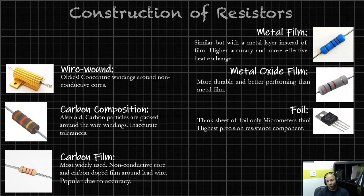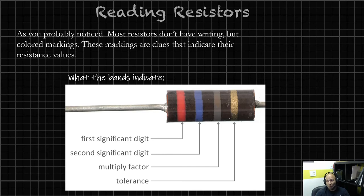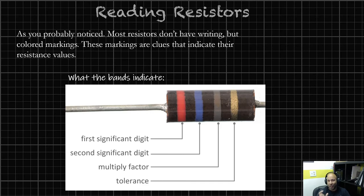Lastly, we have foil resistors. There's a very thin sheet — micrometers — thin foil. These are the highest precision resistance components you'll find in consumer goods. So now you know the types and have an idea of how frequently and where you'll find them. You should also know that just by looking at a resistor, you can tell a whole slew of information about what it's doing in a circuit. Most resistors don't have writing on them, but they use a color code — colored band markings that are clues about the resistance values.